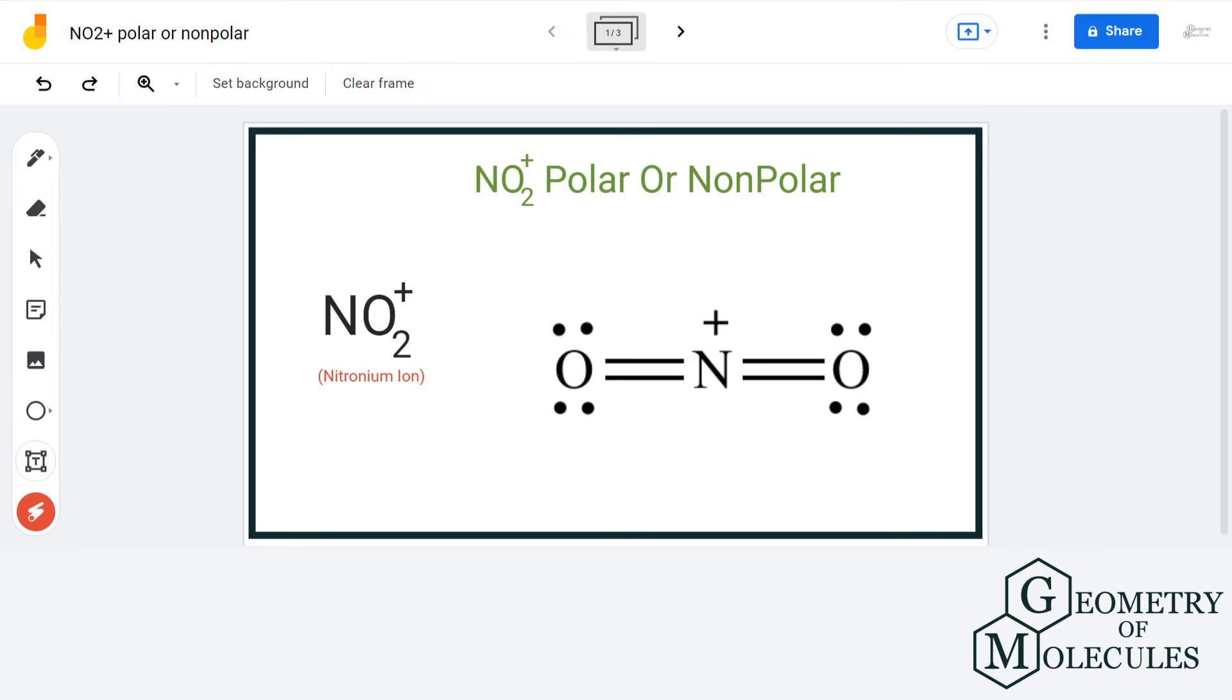Lewis structure just gives us an idea of the arrangement of valence electrons in the atoms. But to understand the polarity, the molecular geometry gives us a better idea.